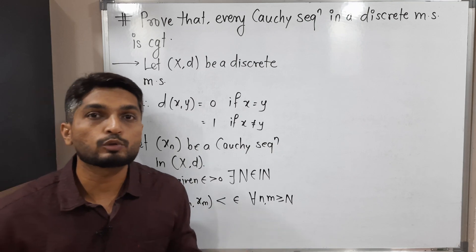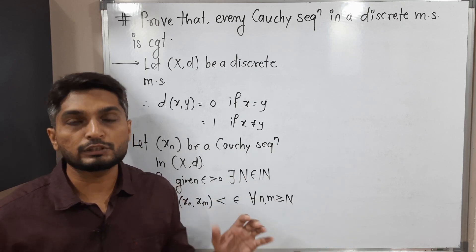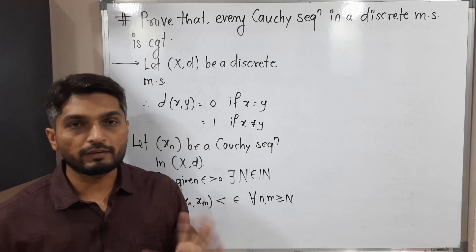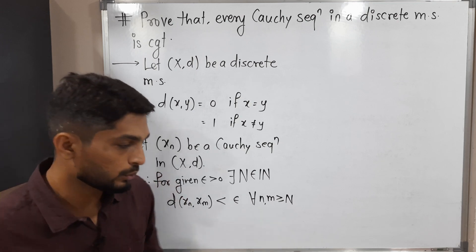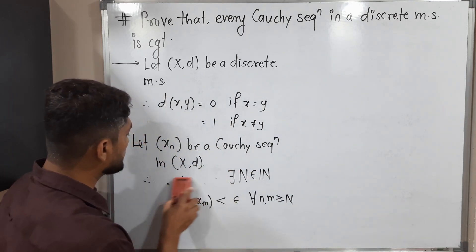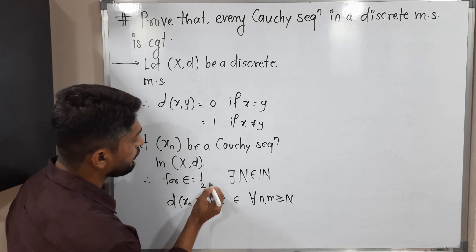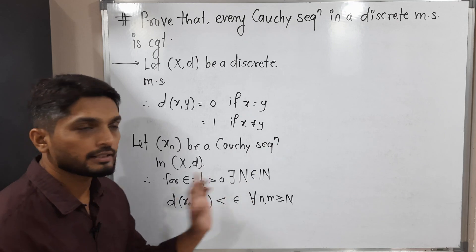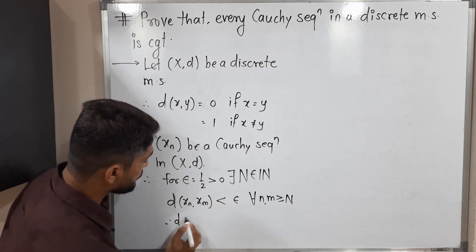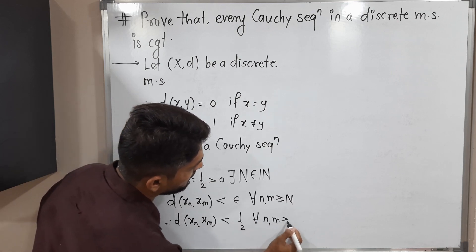The definition says for given epsilon greater than 0, you can take any epsilon — it doesn't matter. Definitely there will be a natural number for which this inequality will work. You can take epsilon equal to 1, 1/2, whatever you want. So here I am going to take epsilon equal to 1/2. Therefore, for epsilon equal to 1/2 — which is obviously greater than 0 — there exists a natural number N such that D(x_n, x_m) less than 1/2 for all n, m greater than or equal to capital N.